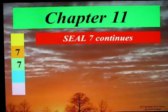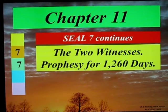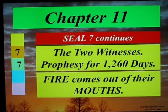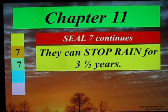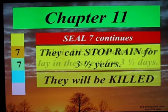In Chapter 11, seal number seven continues. The two witnesses are introduced, and they prophesy for 1,260 days. Fire comes out of their mouths. They can stop rain for three and a half years. They will be killed.